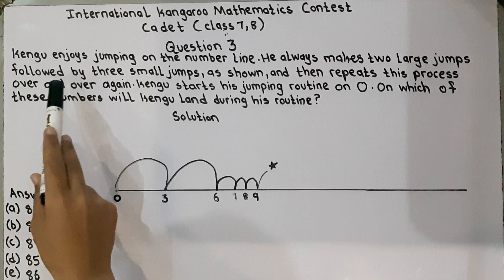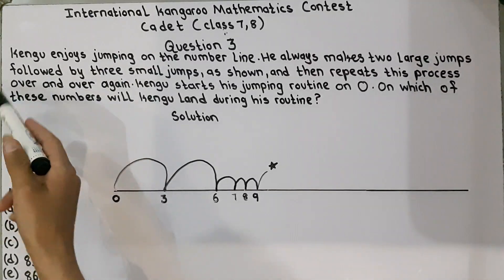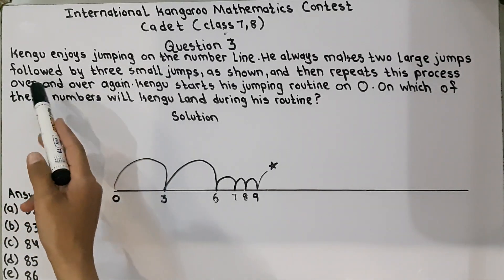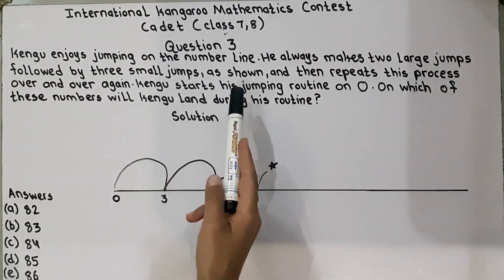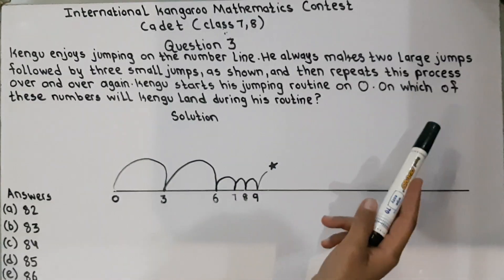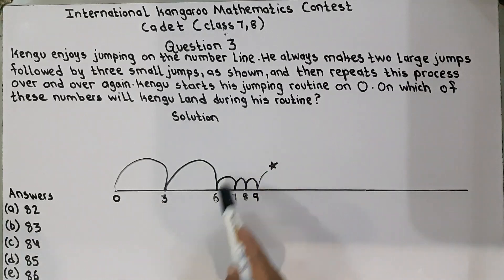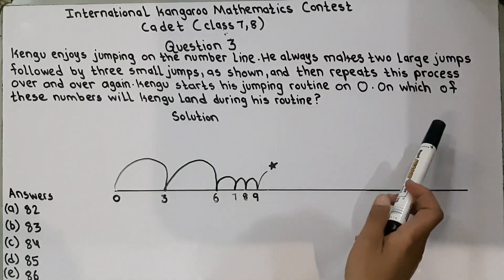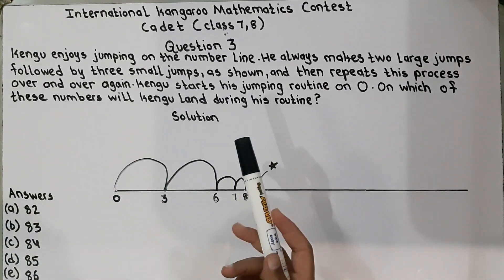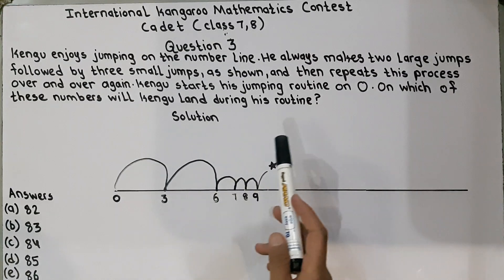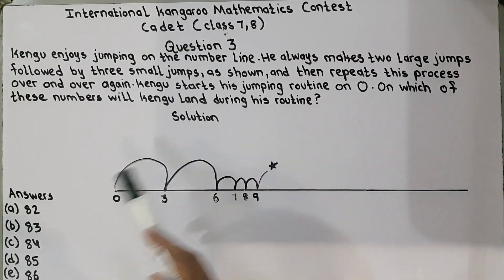The question is: Kangaroo enjoys jumping on the number line. He always makes two large jumps followed by three small jumps as shown, and then repeats this process over and over again. Kangaroo starts his jumping routine on zero. On which of these numbers will Kangaroo land during his routine?